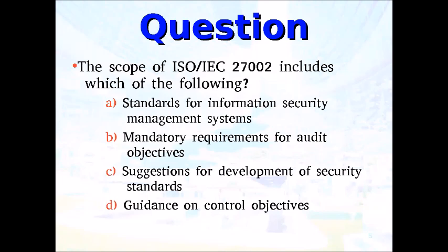So Spock and Kirk are sitting down at the test. 'Spock, the scope of ISO/IEC 27002 includes which of the following?' Spock tries to quantify answers as wrong. Now, 27001 and 27002 are very testable. 27001 is an information security management standard — it allows companies to be certified under this standard through an independent auditing organization, developing trust between organizations. 27002 is the guideline to help you implement this. Answer A: 'Standards for information security management systems?' — Negative, Captain. It is not the standard; 27002 is the guideline. Answer B: 'Mandatory requirements for audit objectives?' — Negative, Captain. That would be a standard, which refers to 27001. So Spock was certain about A and B, and they were wrong.